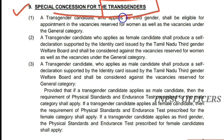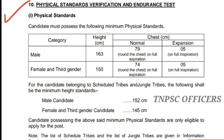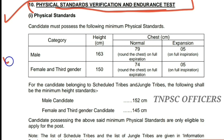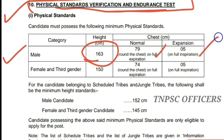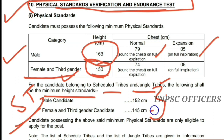There are special concessions for Transgenders. Let's look at the physical standards. Similar to police career standards but with some variations — the height for males is 183 cm, normal chest 79 cm with expansion. For females and transgenders, height is 150 cm. For ST and jungle tribes candidates, male height is 188 cm and female height is 168 cm.